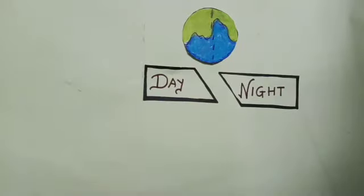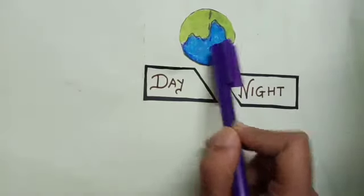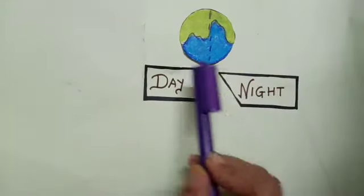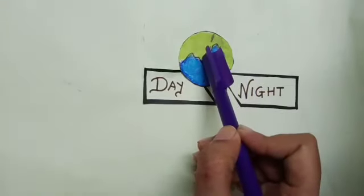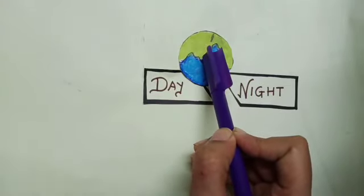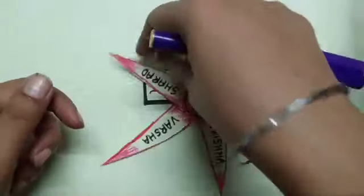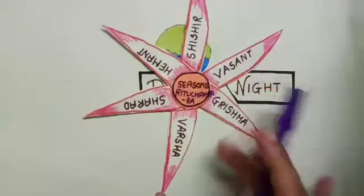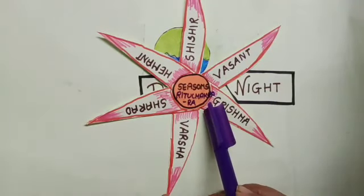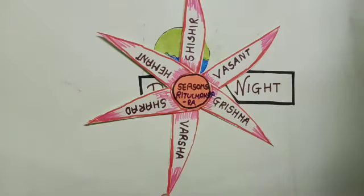Always remember: the rotation of the earth gives rise to day and night, whereas the revolution of the earth and the inclination of its axis gives rise to the cycle of seasons, called Ritu Chakra. I hope you have understood the lesson. Go through the video. Have a good day. Bye-bye.